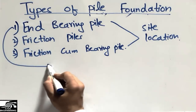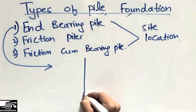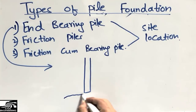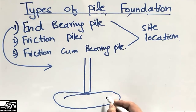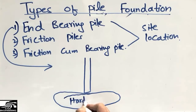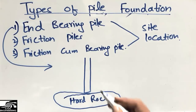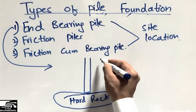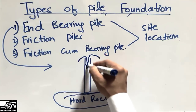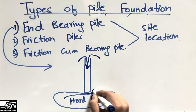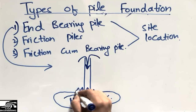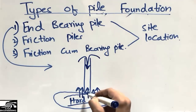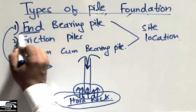The first type is the end bearing pile. This is a type of pile foundation which is based on the hard strata of the soil — hard rock or hard strata. The pile is driven down to the hard rock, and the resistance is provided by the rock in the upward direction. We call it end bearing pile because the load is transferred to the end of the pile.